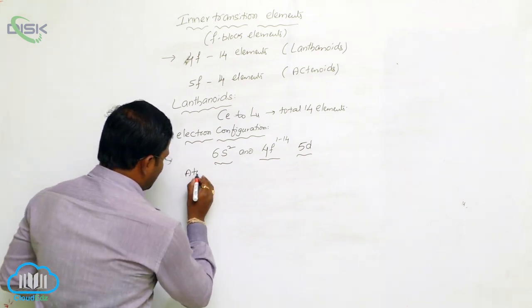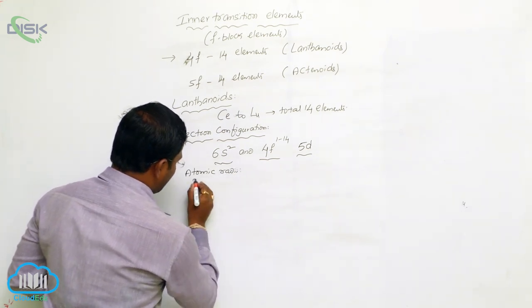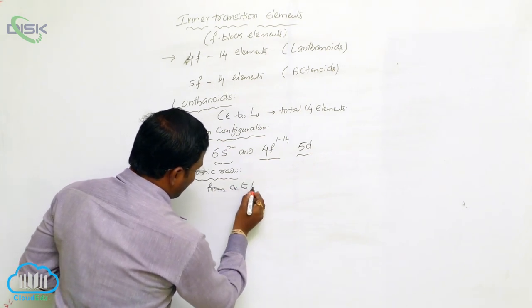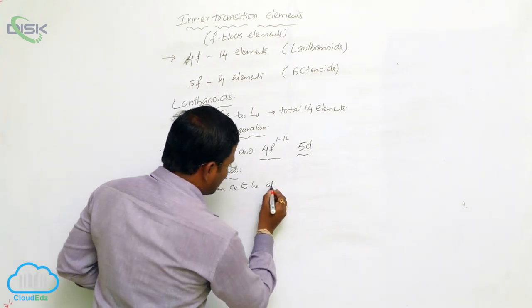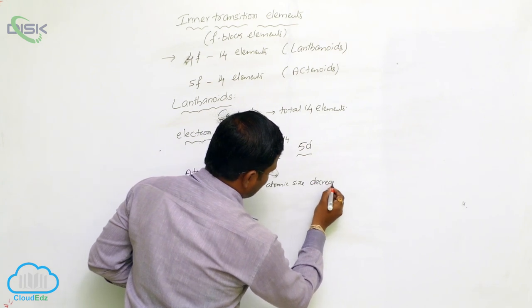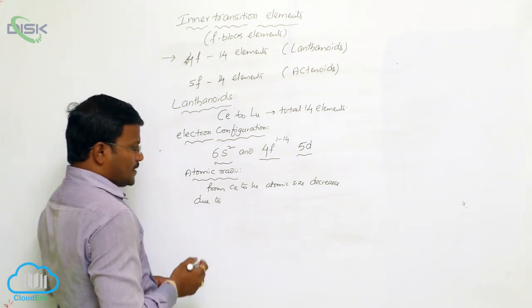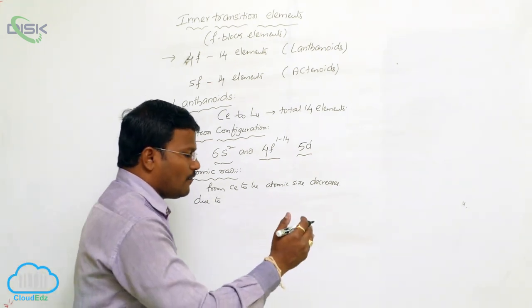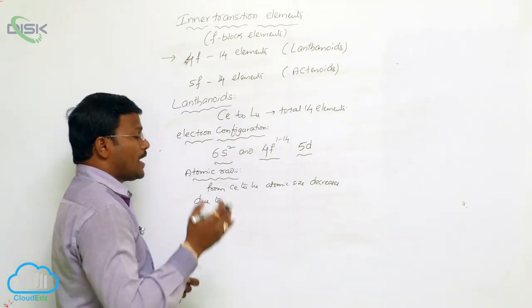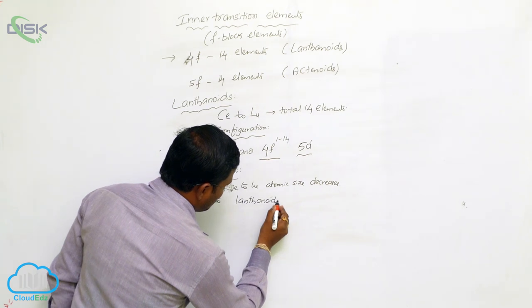Regarding atomic size or atomic radii: from cerium to lutetium, atomic size decreases. This is due to a steady increase in the positive character of the nucleus caused by an increase in atomic number, and also due to lanthanide contraction.